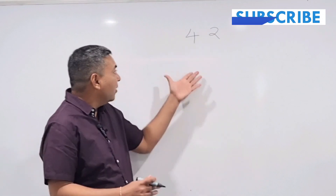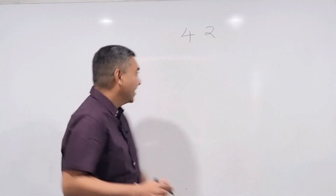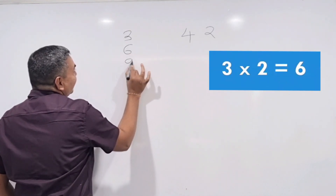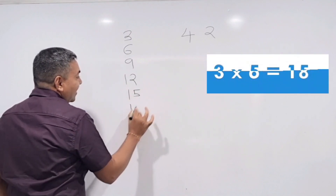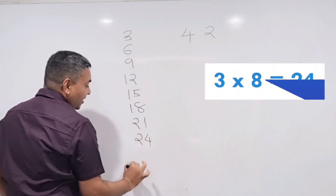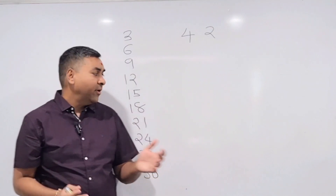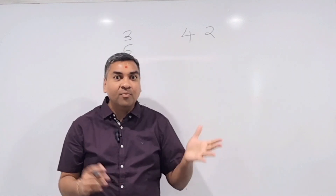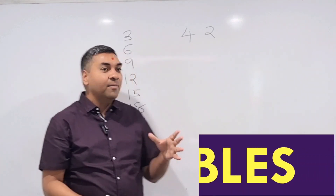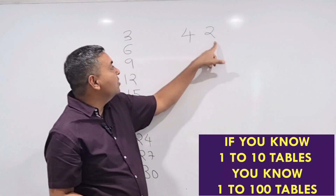If we want to do the table of 42, everyone knows the tables from 1 to 10. For example, the table of 3: 3×1=3, 3×2=6, 3×3=9, 3×4=12, 3×5=15, 3×6=18, 3×7=21, 3×8=24, 3×9=27, 3×10=30. So individually, all of you know tables 1 to 10. Now I'm going to make a bold statement: to know any table from 1 to 100, you only need to know tables 1 to 10.